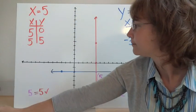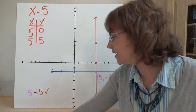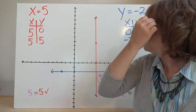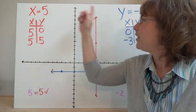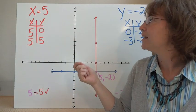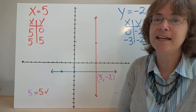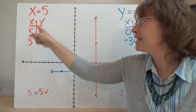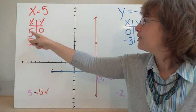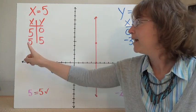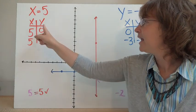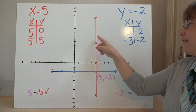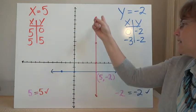Here's an example that a lot of students get confused about because each equation has only one variable — a horizontal and a vertical line. For x equals 5, you have to recognize that there is really a 0y term. So whatever y is, you're multiplying it by 0, and x is always equal to 5. Whether y equals 0, 5, or anything else, x is going to be 5. So you can graph points like (5, 0) and (5, 5) to get a vertical line.